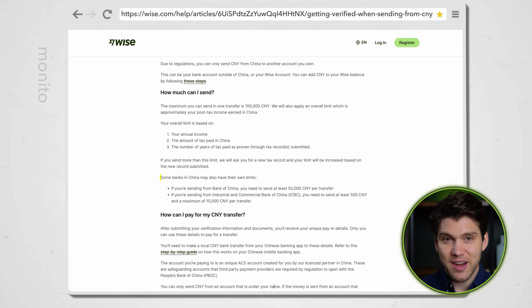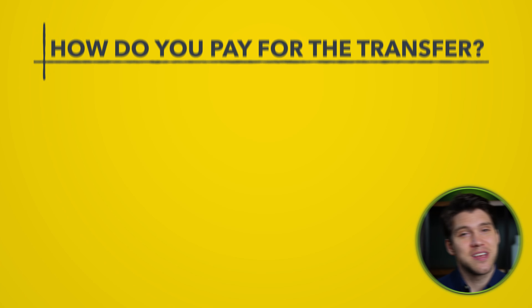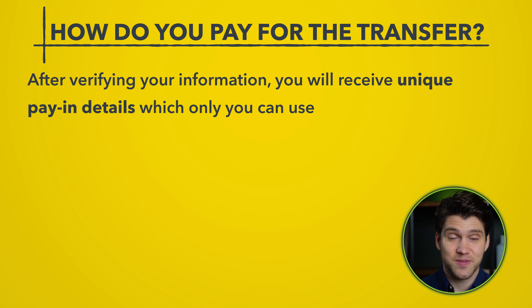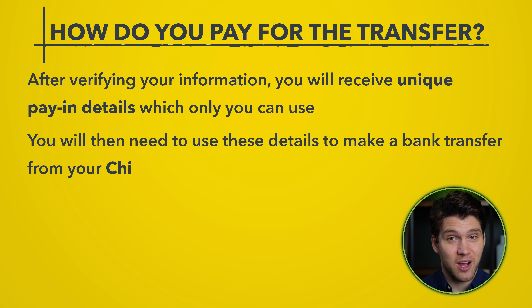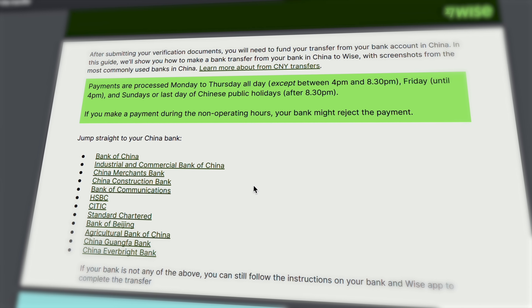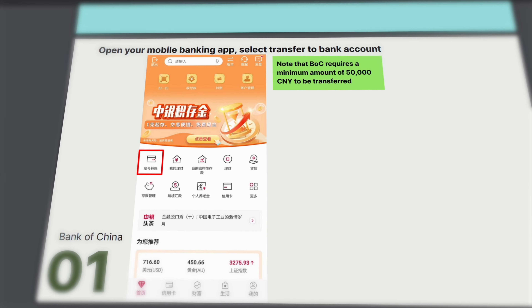Some Chinese banks may have their own limits — for example, the Bank of China has a transfer limit of 50,000 CNY. After verifying your information you'll receive unique payment details which only you can use to pay for your transfer. This involves making a local CNY bank transfer from your Chinese banking app to these specific details. WISE has a very detailed guide on how to pay for your transfer, taking you step by step through the process and covering many of the Chinese banks.